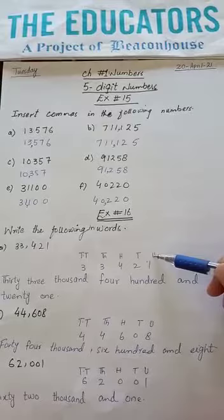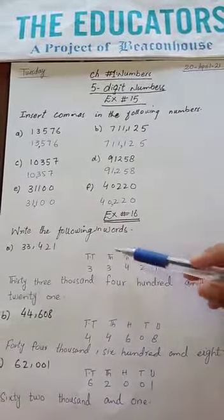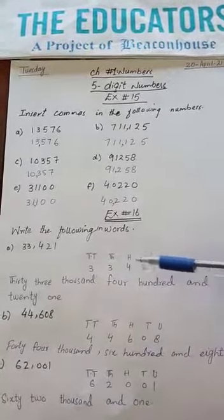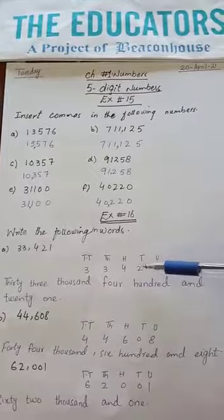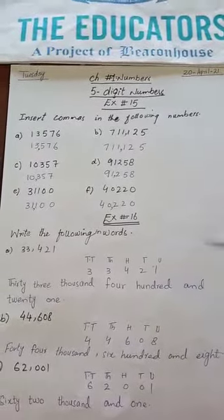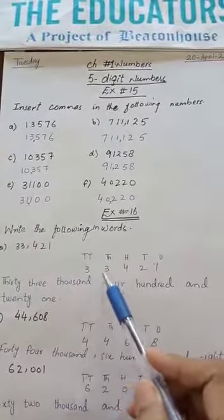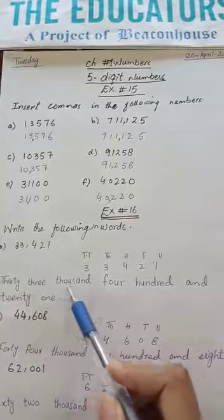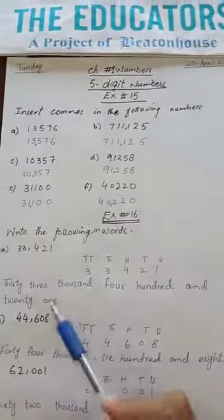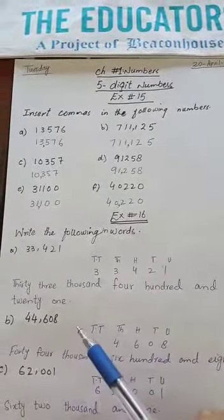Make a place value chart: units, 10, 100, 1,000, 10,000, and 100,000 on these numbers. Then the first number is 33,421.